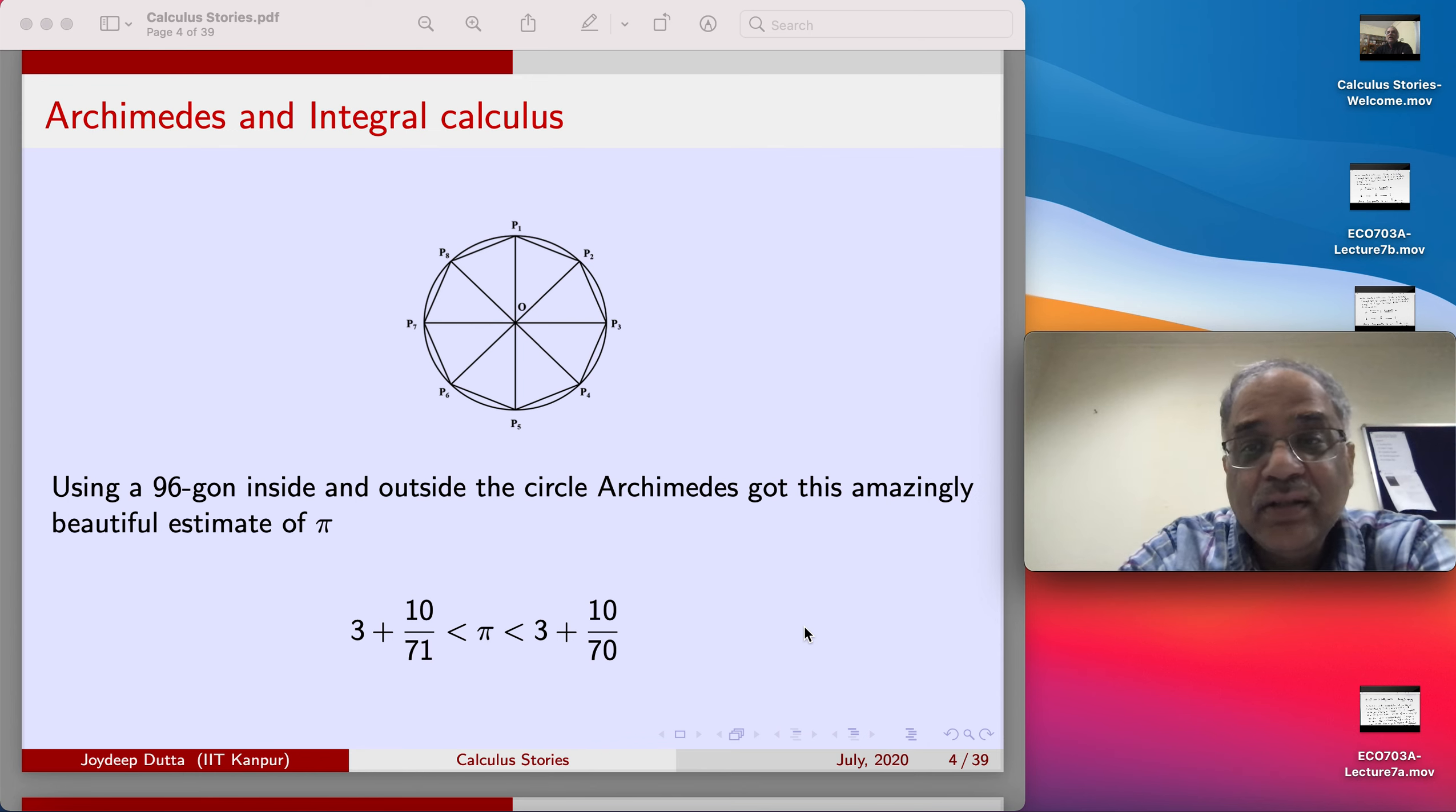He used 96 points, and with that he estimated the value of pi. We will soon learn how to estimate the value of pi. We are very comfortable using pi equals 22/7, and that's the way we do it in our regular classroom.